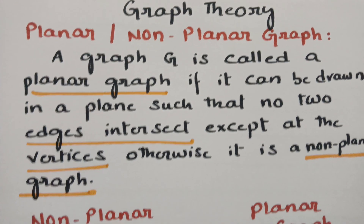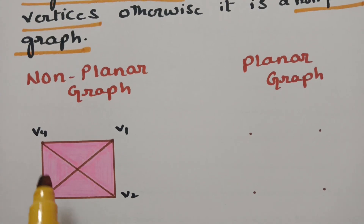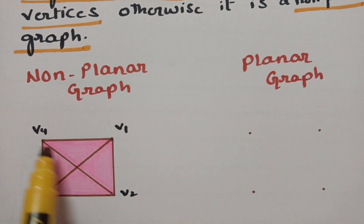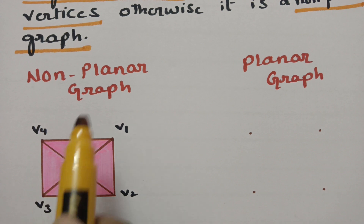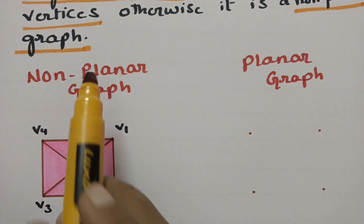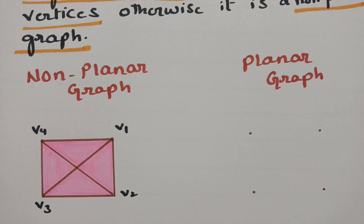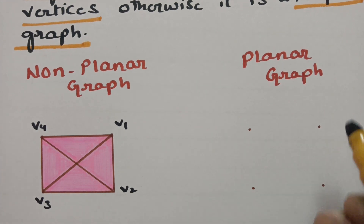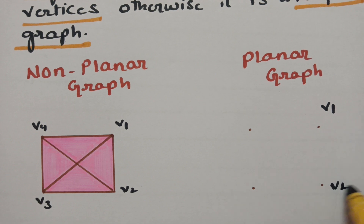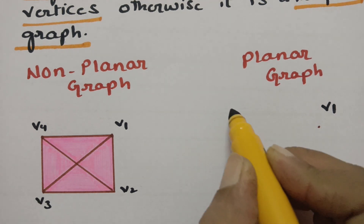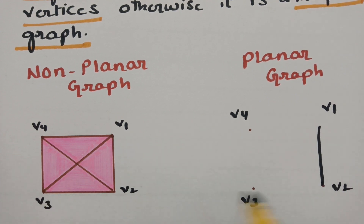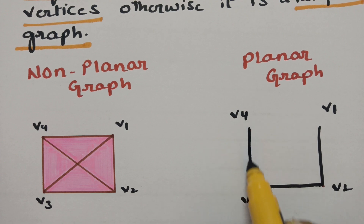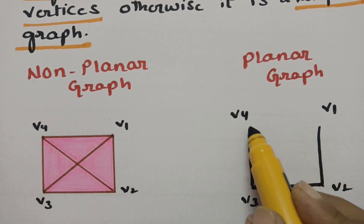Let me explain with an example. This is a non-planar graph where there are four vertices: V1, V2, V3, and V4. There is an edge crossing — these two edges cross each other — so this graph is called non-planar. Now this graph can be redrawn: V1, V2, V3, V4, with edges V1 to V2, V1 to V3, V3 to V4, and V1 to V4.